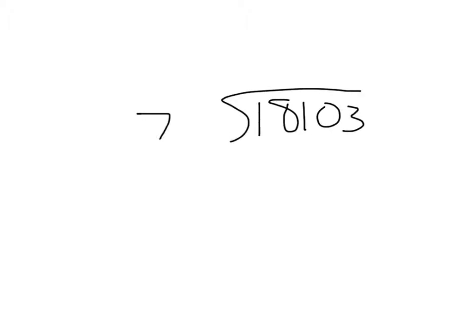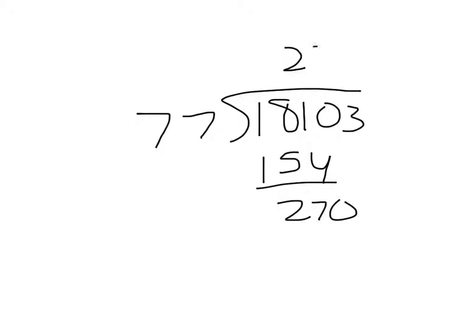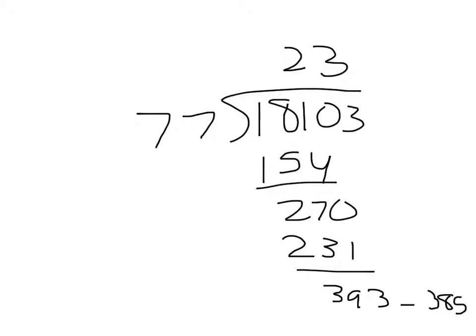Now I'm solving the problem. 2, 2 times 181 is 5... 4... 7... 270. 3 times 231... minus 385... equals 8.